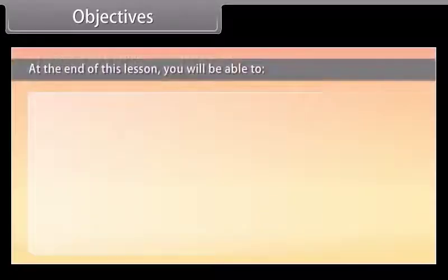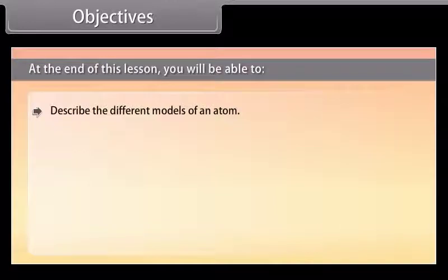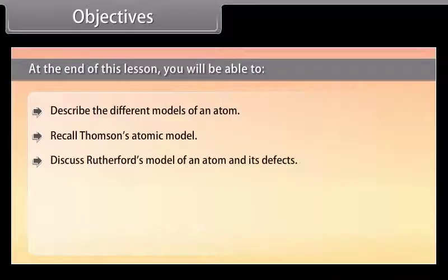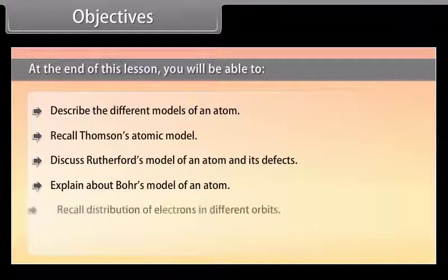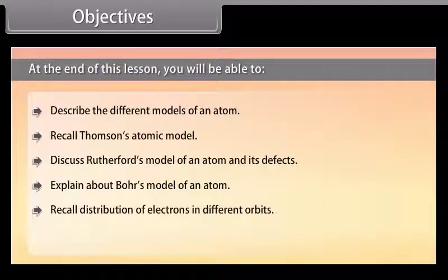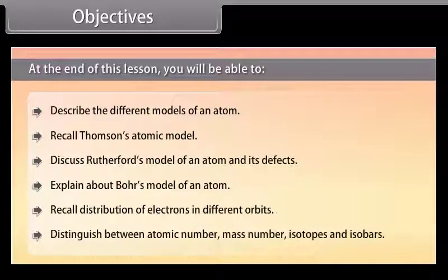At the end of this lesson, you will be able to: describe the different models of an atom; recall Thomson's atomic model; discuss Rutherford's model of an atom and its defects; explain about Bohr's model of an atom; recall distribution of electrons in different orbits; and distinguish between atomic number, mass number, isotopes and isobars.